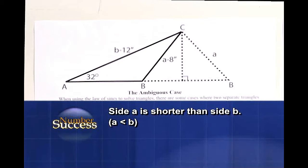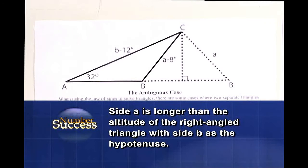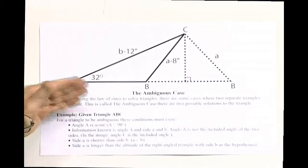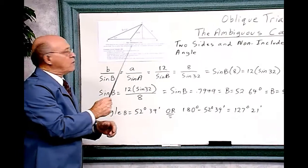Side A is shorter than side B - this is 8 inches, and B is 12 inches, so it's shorter. And then side A is longer than the altitude, this line over here of the right angle triangle with side B as the hypotenuse. So all these cases fit this diagram over here.